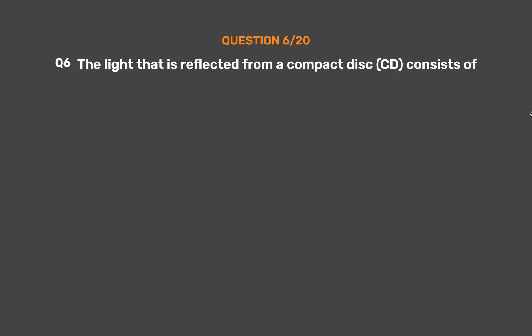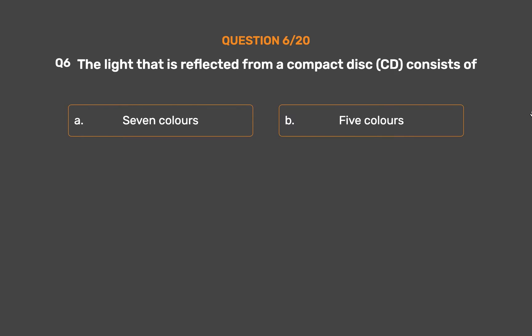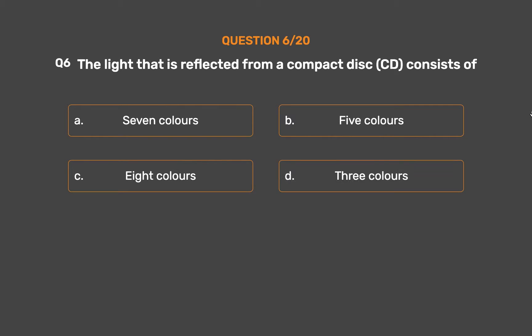Question number 6. The light that is reflected from a compact disc (CD) consists of: option A, seven colors; option B, five colors; option C, eight colors; option D, three colors. The correct answer is option A, seven colors.